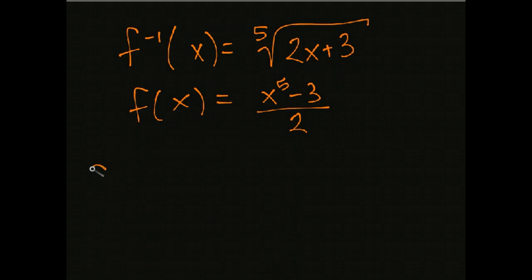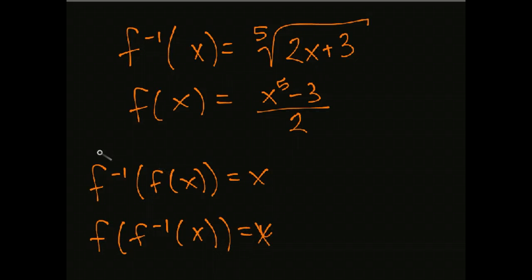You can always double check by taking f inverse of f of x, making sure you get x, and f of f inverse of x, and make sure you get x. So this is how you check if you're in doubt. And I think probably checking one of them is sufficient because you already did all the work. To get there, you're going to find any errors probably in that first step. So it's probably sufficient to just check one of them. And that's all there is for this section.